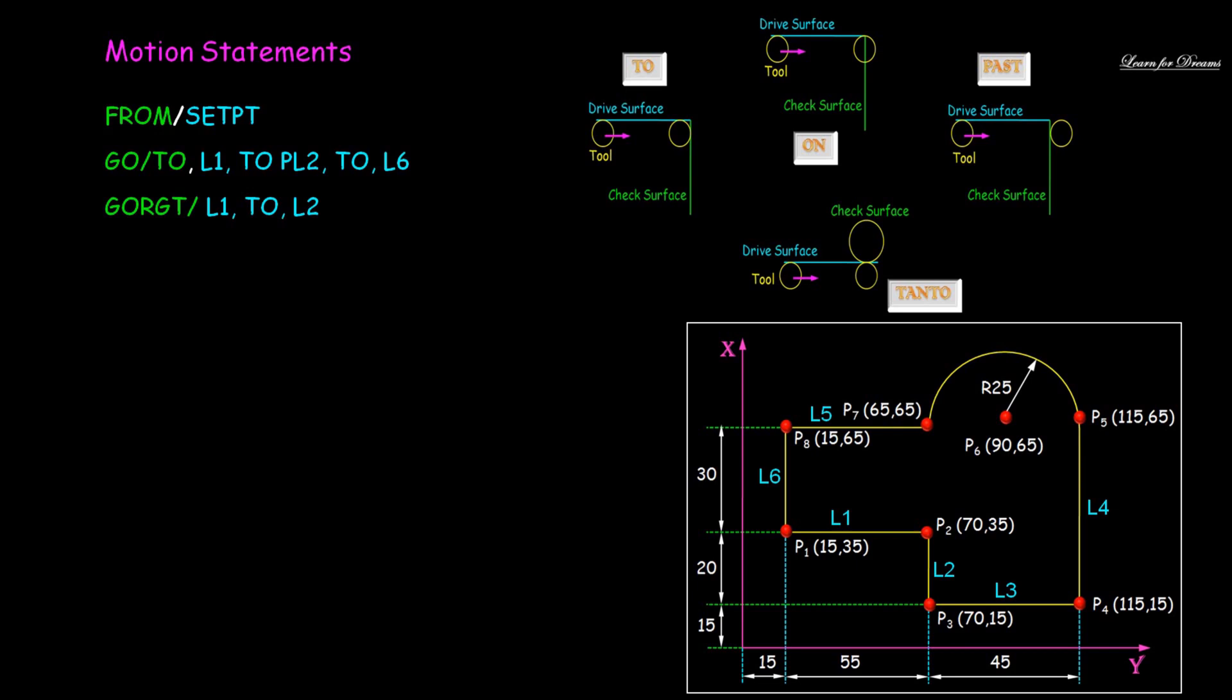Again tool is not crossing L6, hence TO L6. Now tool is at P1. Now tool has to go to the right side, hence GO RIGHT slash L1 TO L2. Here L1 is drive surface and L2 is check surface. We don't want to cross L2, so we will use L1 TO L2.